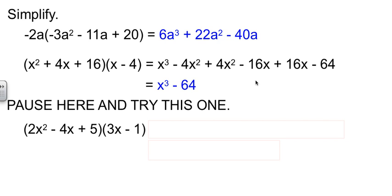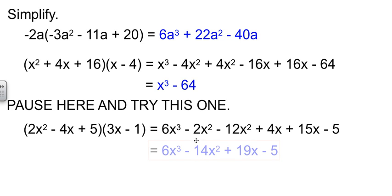And as before, at this point I'm going to ask you to pause your video, solve this problem, try it out. Don't forget to collect your like terms, come back and check your answer. So just like above, I'm going to distribute everything. 2x squared to each one, negative 4x to each one, and 5 to each one. And then we'll collect like terms. Negative 2x squared and negative 12x squared makes negative 14x squared, 4x plus 5x makes 19x. So 6x cubed minus 14x squared plus 19x minus 5.